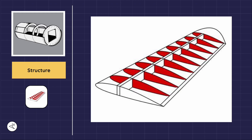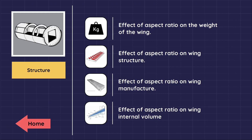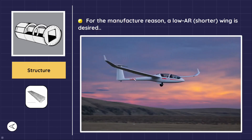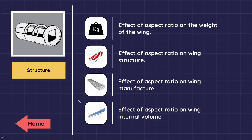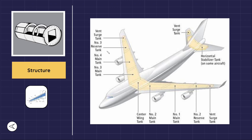Regarding wing manufacturing, for manufacturing reasons a low aspect ratio and shorter wing is preferred. Lastly, regarding wing internal volume, a low aspect ratio wing provides a greater useful internal volume, which can be used to house fuel tanks, retractable landing gear, and other systems.